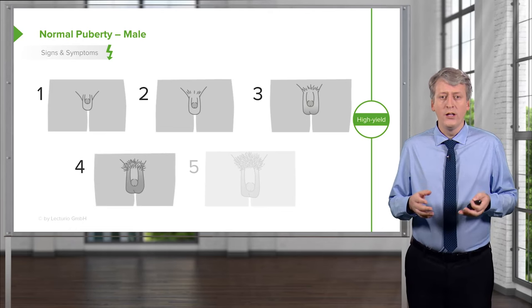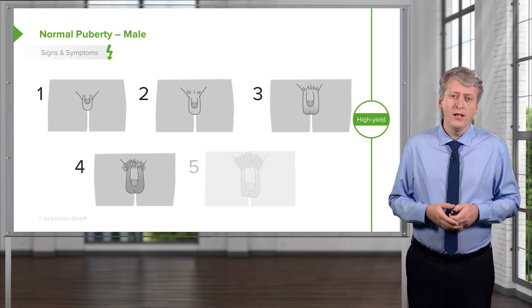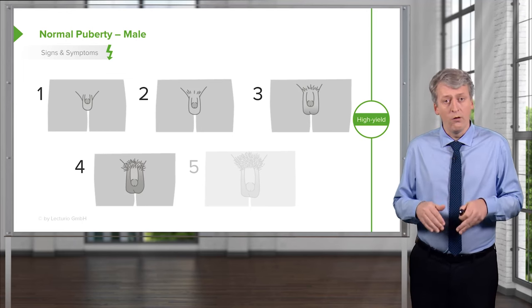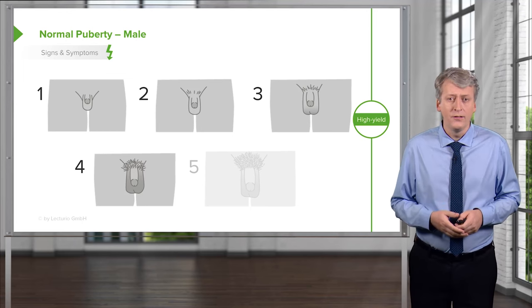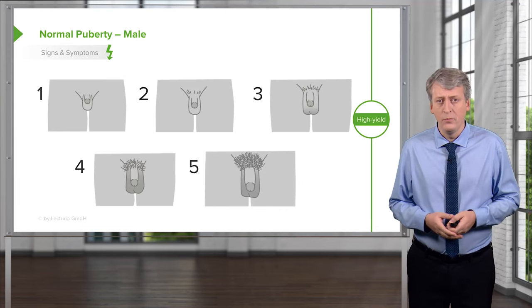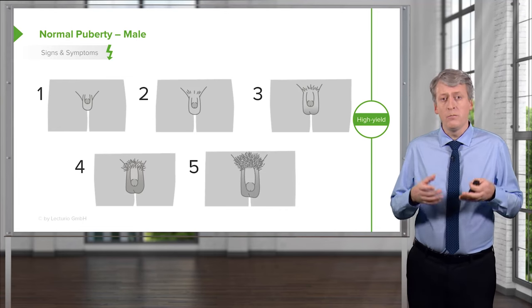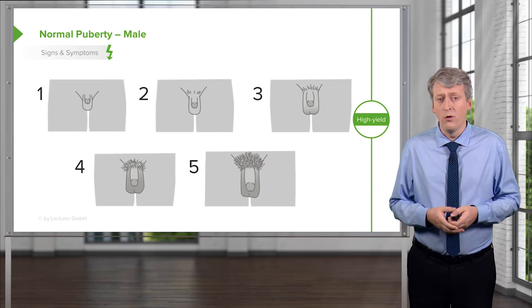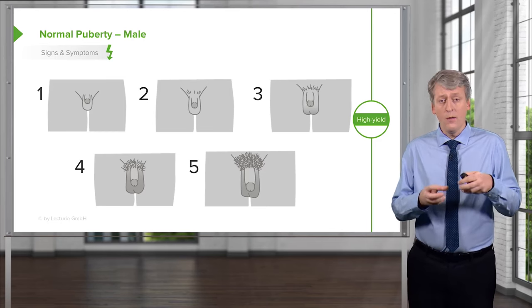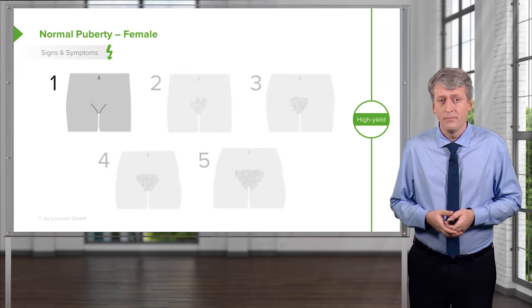Tanner 4 is when there is a full amount of pubic hair around the genitalia but none going up the ramus or down onto the thighs. Tanner 5 is the full adult amount of pubic hair. You can also notice that the penis and testicles are growing, and there is an orchidometer where you can actually measure the size of the testes.